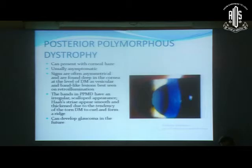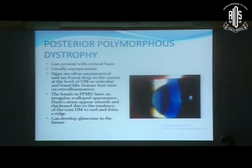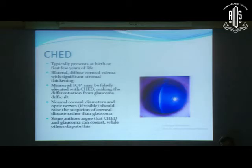Corneal dystrophies can also present with corneal opacities. Posterior polymorphous corneal dystrophy is relatively rare; it can present with corneal haze and is usually asymptomatic. Signs are often asymmetrical and found deep in the cornea at the level of Descemet's membrane as vesicular and band-like lesions, best seen on retroillumination. The bands can sometimes mimic Haab's striae, but they have an irregular and scalloped appearance, whereas Haab's striae are smoother and thickened. These children can also develop glaucoma in the future.